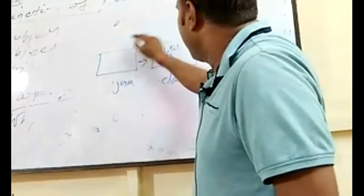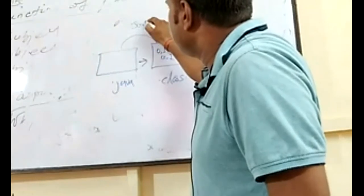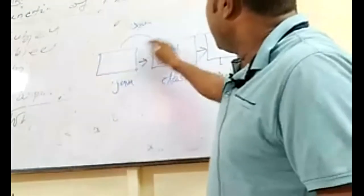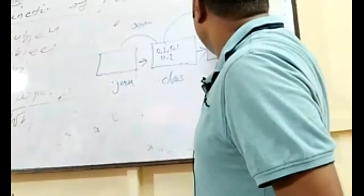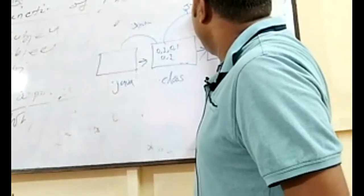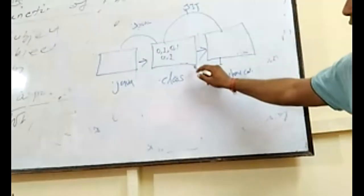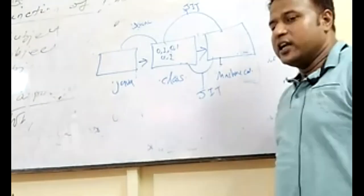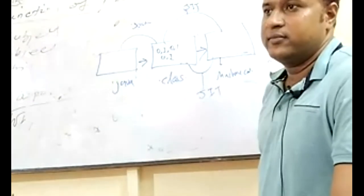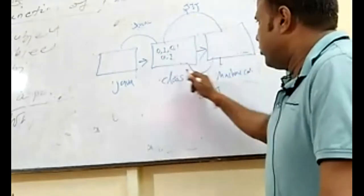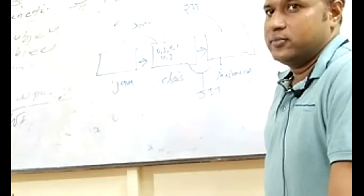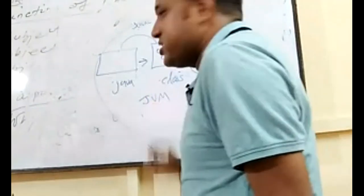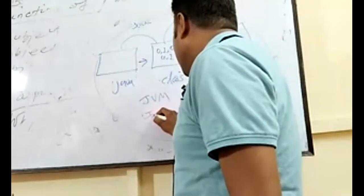The Java compiler name is javac. It converts the source code to bytecode, and then bytecode is converted to machine code using the JIT compiler. JIT stands for Just-In-Time compiler — at the time of execution, it converts bytecode to machine code.